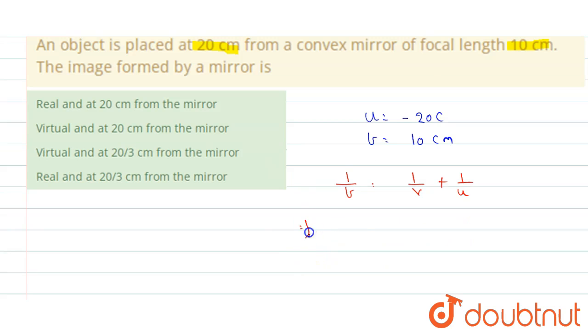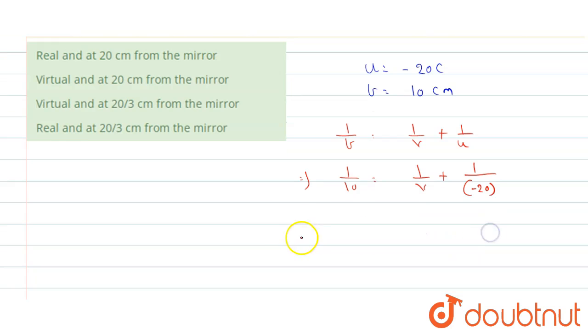That implies, we get 1 by 10 is equals to 1 by v minus of, sorry, plus in case of u, we will get minus 20 centimeter.